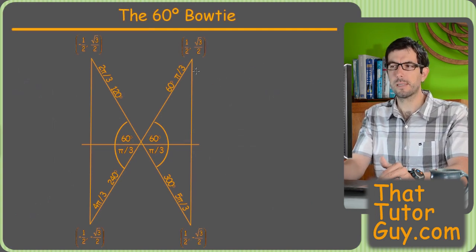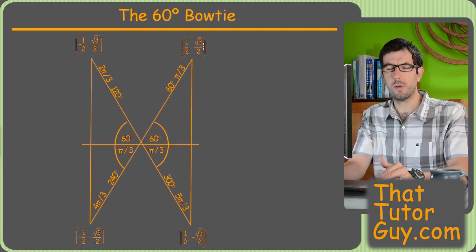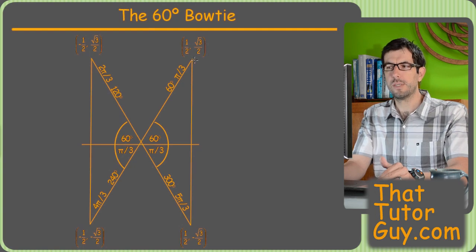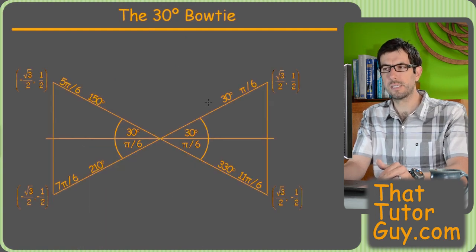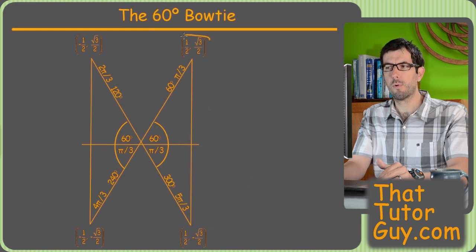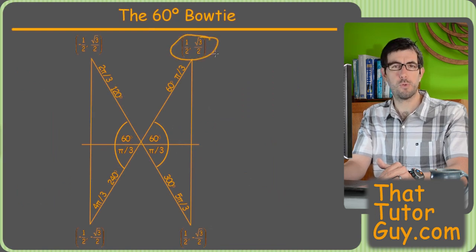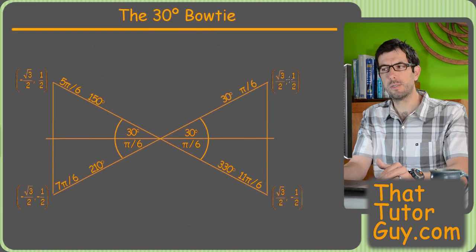The 60 degree bowtie, same thing, except the 1 half and the root 3 over 2 are switched. But on this one, when you're looking at the 30 versus the 60, you have the same coordinates. They both have a 1 half in them and a root 3 over 2 in them, but they're switched.